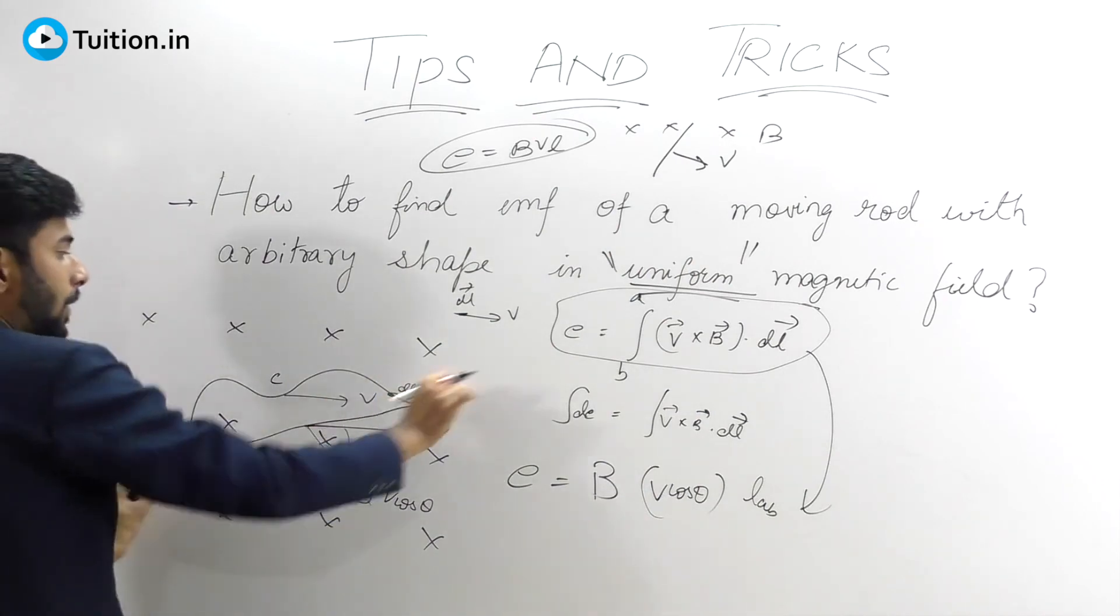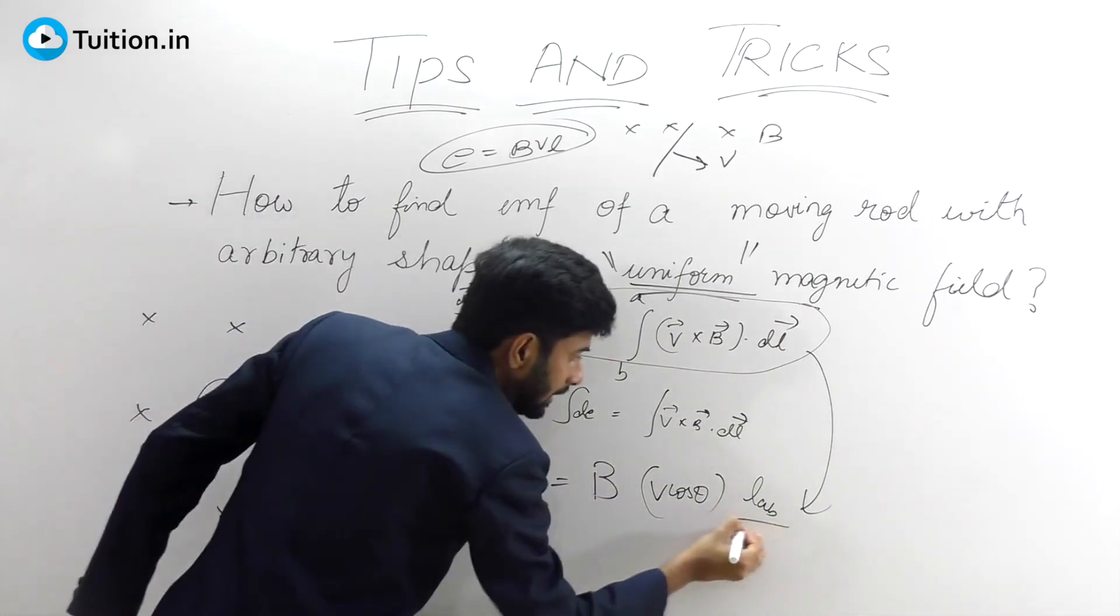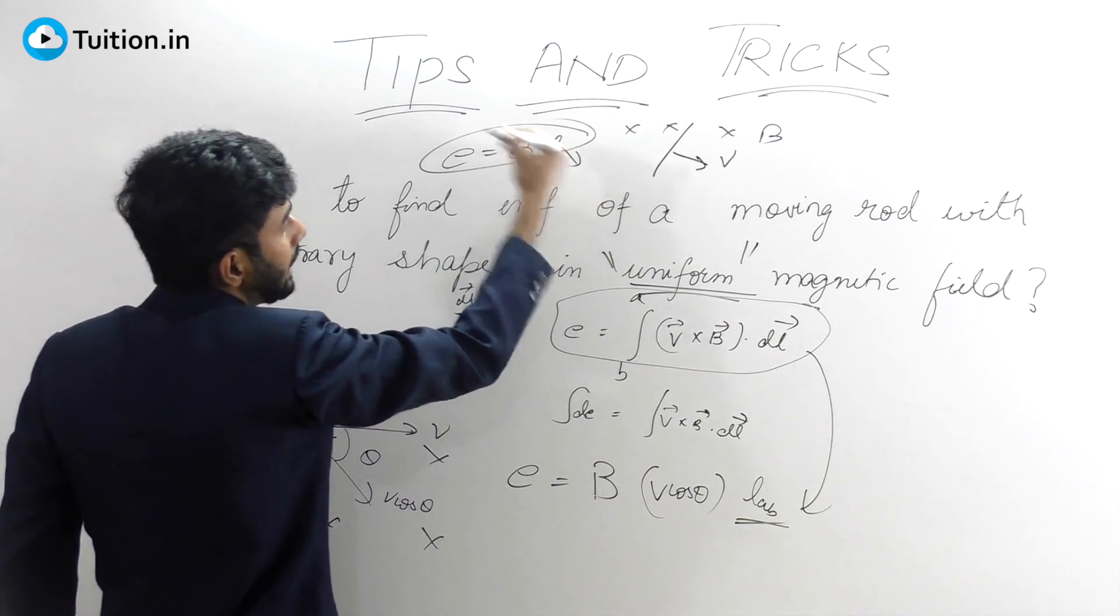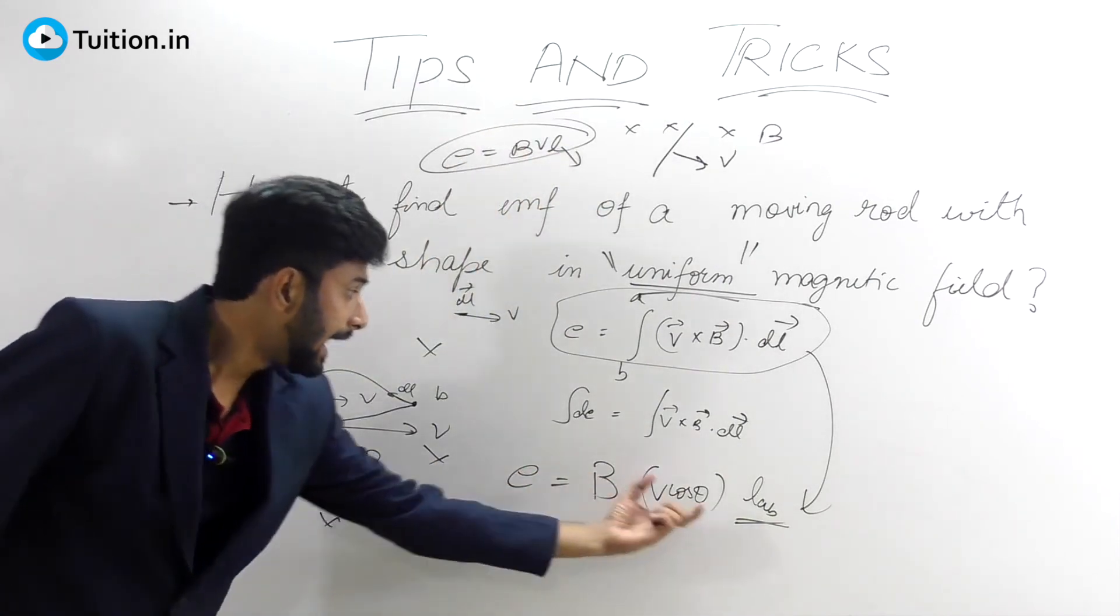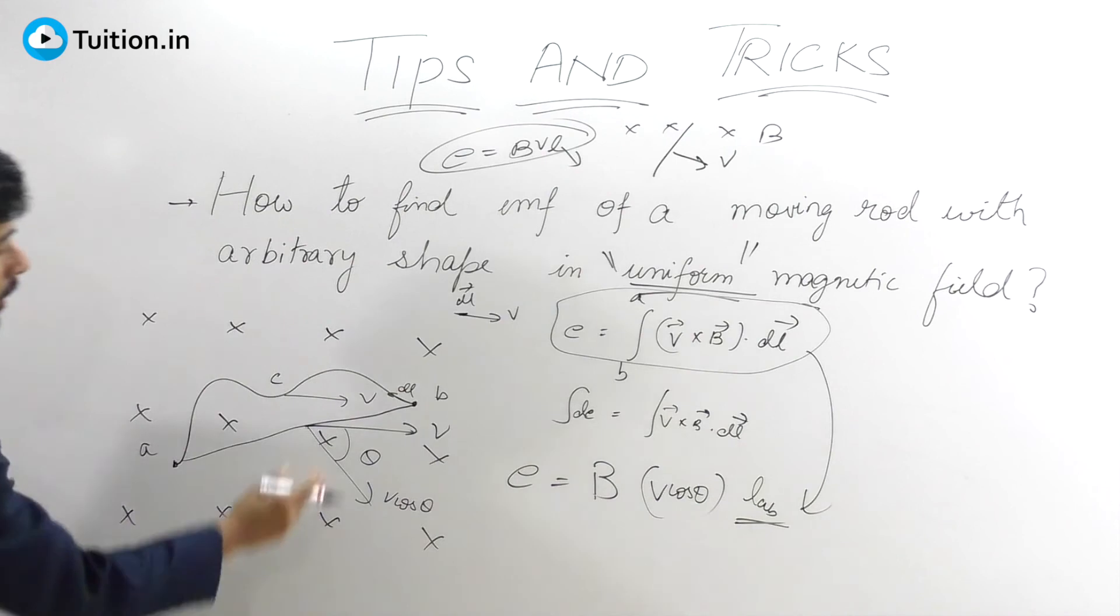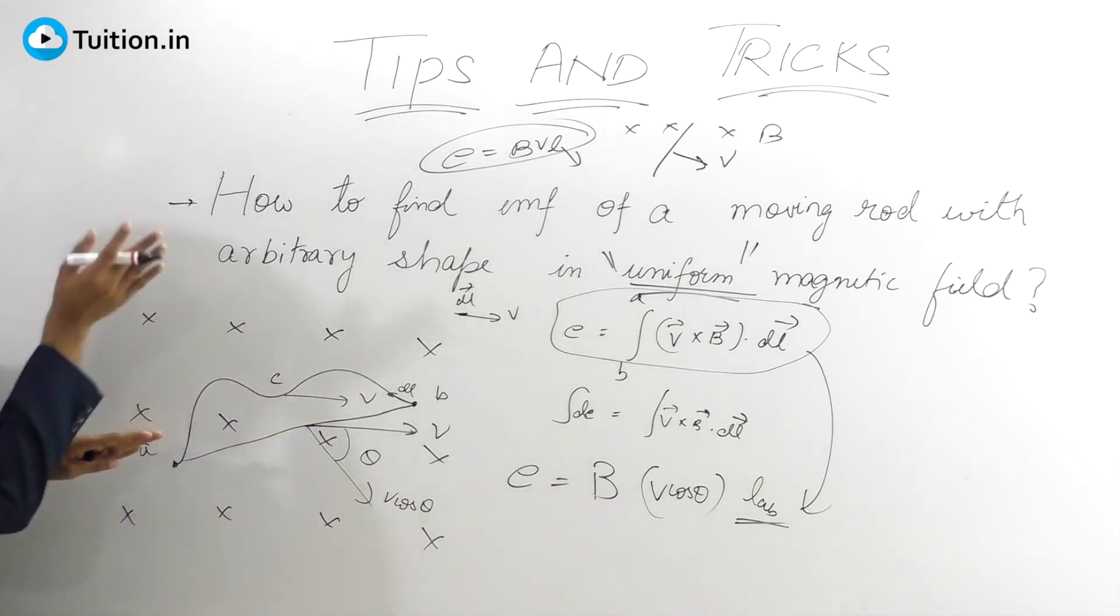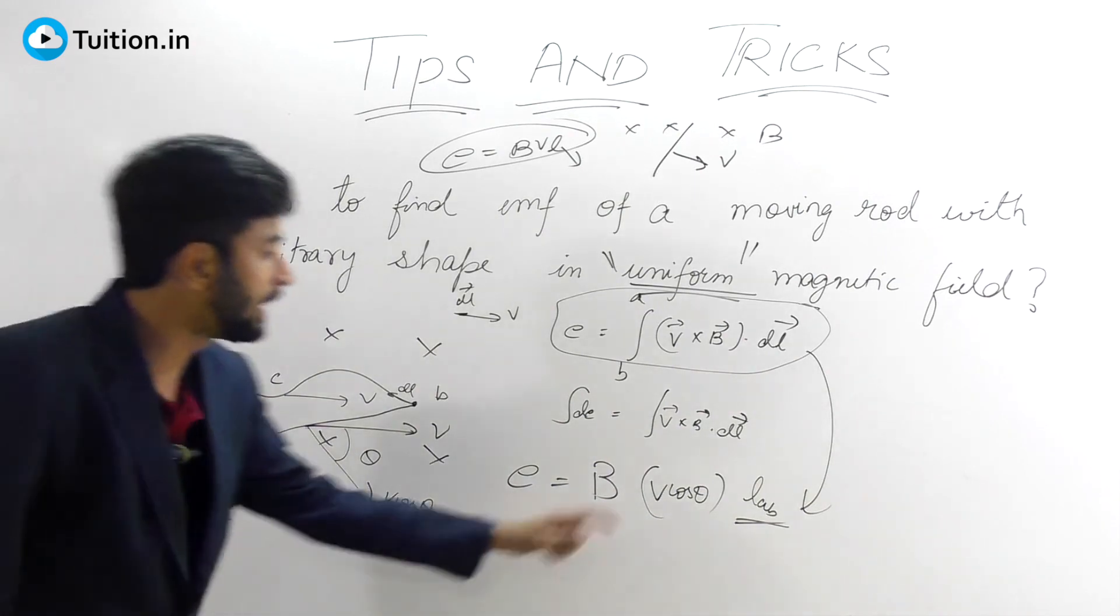So what do you have to do? First, join the endpoints and get the length. In this BVL, L will be your net length, B will be whatever it is, and v—you just need to take that velocity which is perpendicular to this effective length.